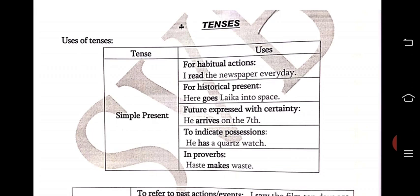Simple present: if you have a habitual action — 'I read the newspaper every day' — keyword: every day. Habitual action comes under simple present. And then historical present — 'here goes Latika into space.' Future expressed with certainty — 'he arrives on the seventh.' To indicate possession — 'I have a watch', 'he has a quartz watch.' And in proverbs. For simple present tense you should keep 5 categories in mind: habitual actions, historical present, future expressed with certainty, to indicate possession, and for proverbs.